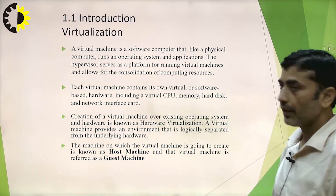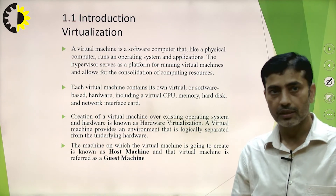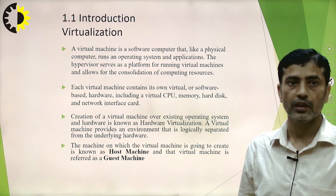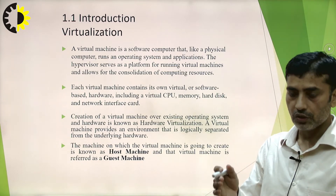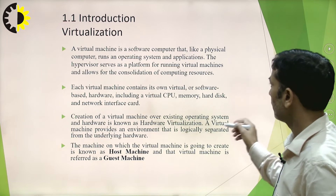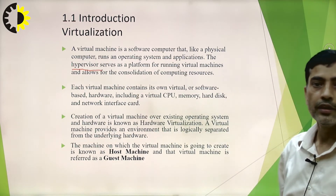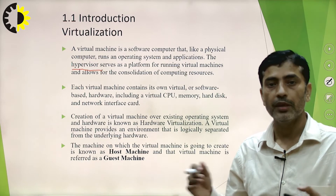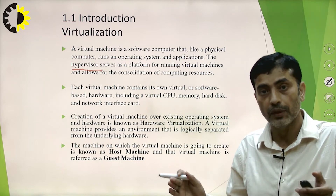A virtual machine is a software computer that, like a physical computer, runs an operating system and applications. The hypervisor serves as a platform for running virtual machines and allows for the consolidation of computer resources. This virtualization software is also known as a hypervisor. It is the hypervisor that enables you to run multiple operating systems, create a virtual environment, and create multiple virtual machines on the same hardware.